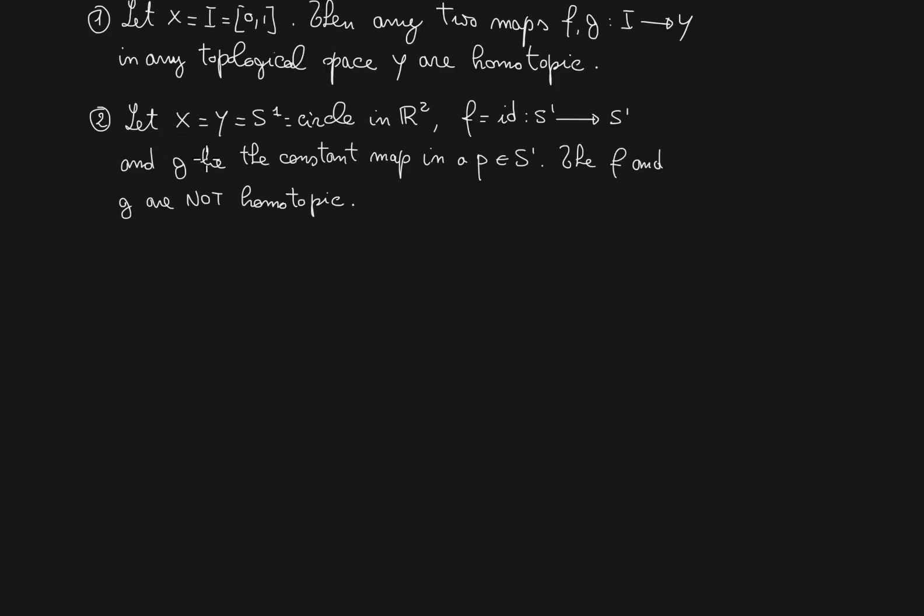Second example is the following. Assume that x and y are the circles S1, and f is the identity map from S1 to S1, and g is the constant map to a point P of S1. Then f and g are not homotopic. In other words, the constant map to a point and the identity map from S1 to S1 are not homotopic, whereas before they were.